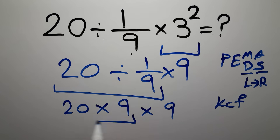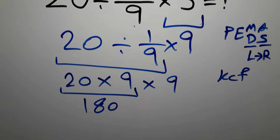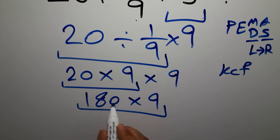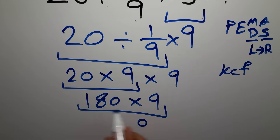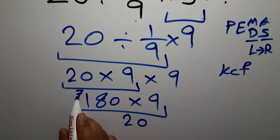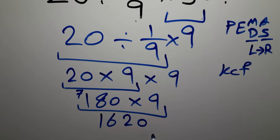So we have 20 times 9, which gives us 180, and then times 9. 9 times 0 is 0, 9 times 8 is 72 — write 2 here and carry 7. 9 times 1 gives us 9, and 9 plus 7 gives us 16. So our final answer to this problem is 1620.